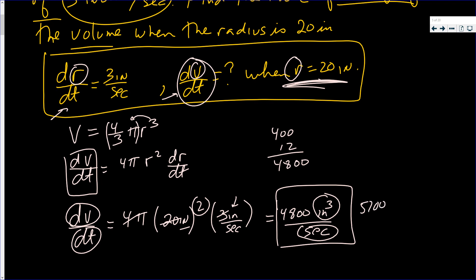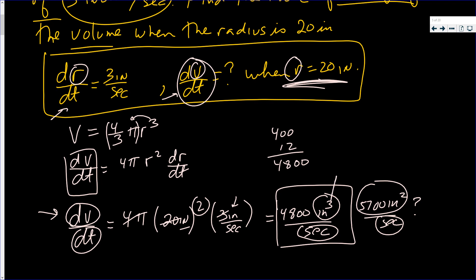If you got 5,700 inch cubed per second, it looks right at a quick glance. However, if you said the change in volume was 57 square inches per second, I'd have a question — because that's area over time, not volume. Volume is three-dimensional and should have cubic units. Area has square units. Linear measurements have just inches to the first power. If you understand units, you can easily check your answers.